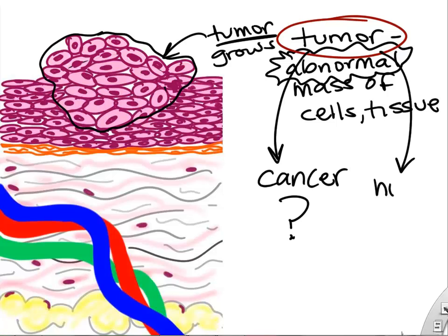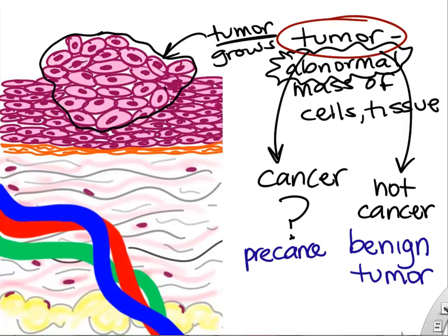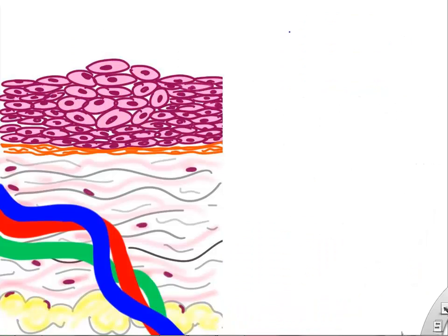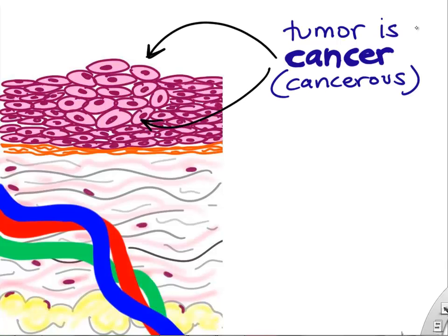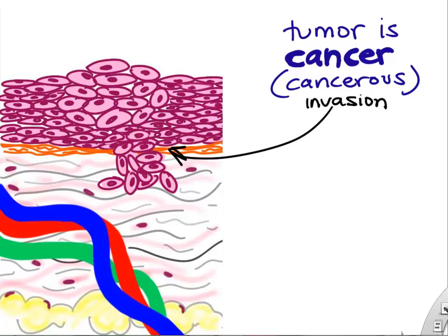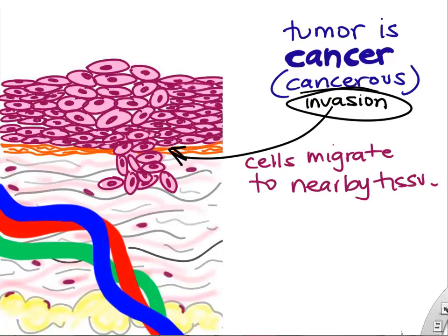What would make a tumor a cancer or not cancer? A tumor that is not cancerous we call a benign tumor. Some tumors, though, are cancerous or precancerous — we would call it a cancerous tumor. So tumors can come in noncancerous varieties and cancerous varieties. What makes a tumor cancer? First of all, it has some special abilities. The tumor is able to invade nearby tissues. In this example, we're showing the epithelial cancer invading the nearby connective tissue — invasion is a characteristic of cancer.